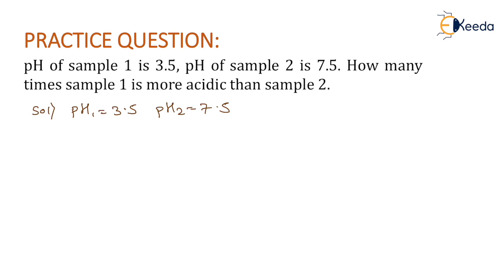To determine the acidic nature, we need to find the concentration of H⁺ ions. We know the formula: pH = -log₁₀[H⁺]. If we put in the pH of sample 1, we will determine the concentration of H⁺ for sample 1.